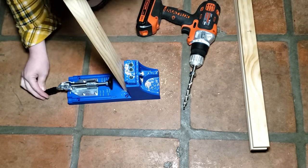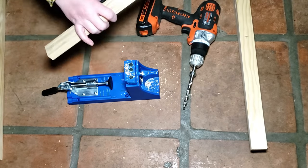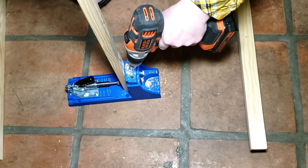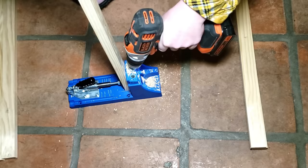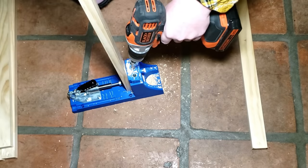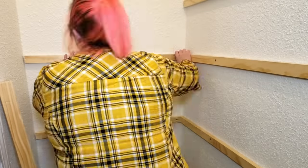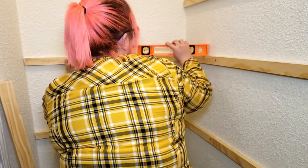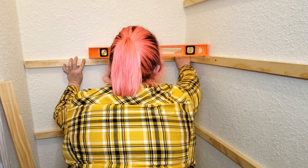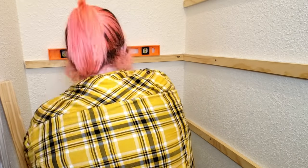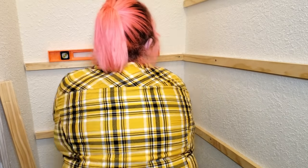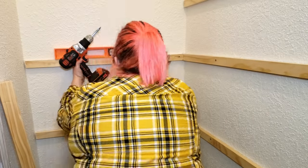The cleats on the side walls will be attached to the studs and to the back cleat. To get them ready, after cutting them to size, I used my pocket hole jig to add one pocket hole on one side of each cleat. I lined up the side cleat with the back one and used my level to make sure the side was level with the back. Then, I attached the two with a pocket hole screw first, then with stud screws into the wall.